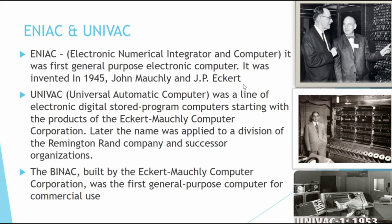ENIAC, the Electronic Numerical Integrator and Computer, was the first general-purpose electronic computer, invented in 1945 by John Mauchly and J. Presper Eckert. UNIVAC, the Universal Automatic Computer, was a line of electronic digital stored-program computers starting with the products of the Eckert-Mauchly Computer Corporation, later applied to a division of Remington Rand. BINAC, also built by Eckert-Mauchly, was the first general-purpose computer for commercial use; these are considered among the supercomputers of their era.